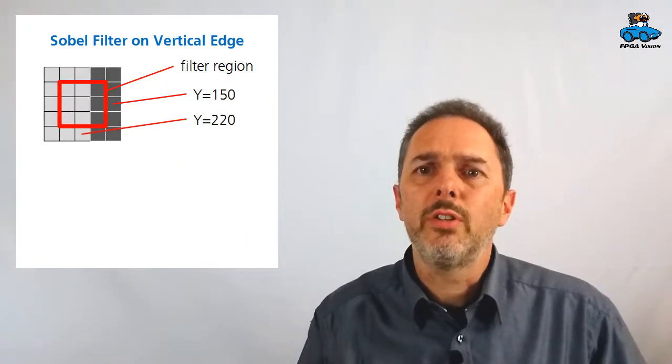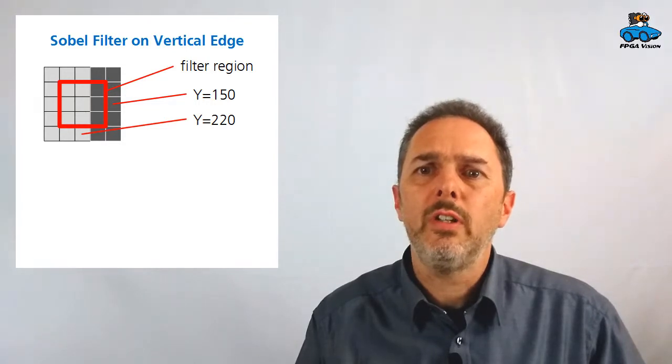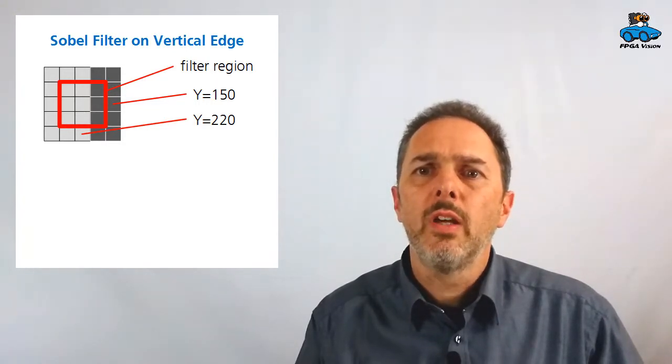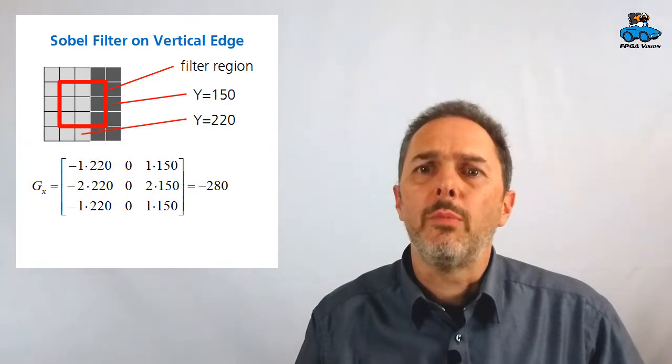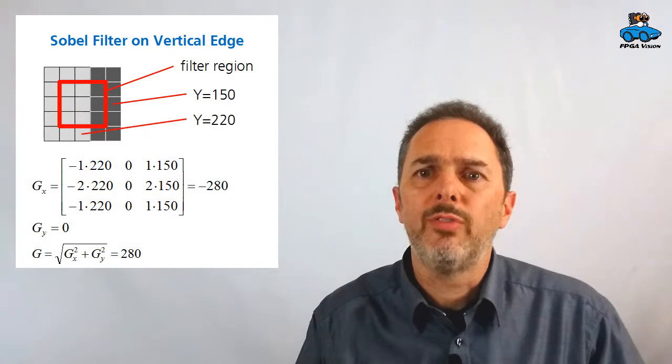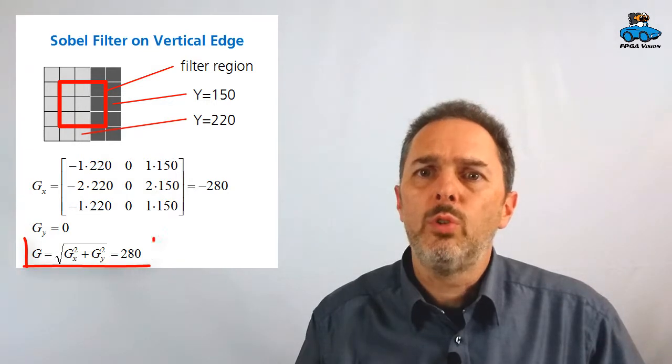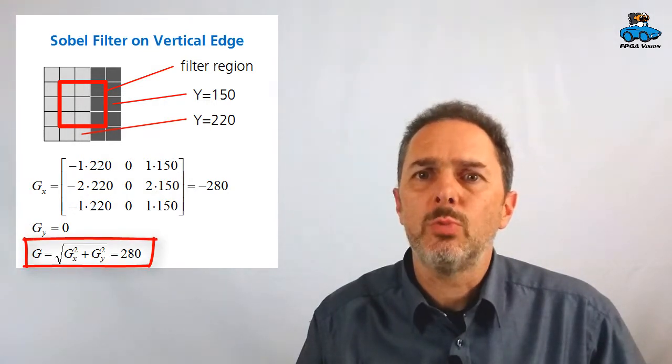So let's consider a vertical edge. We have some pixels with a value of 150, others with 220. If we take the Sobel filter, we get from the horizontal filter a value of minus 280, and from the vertical filter, we get a value of 0. So if we take both values to the square, add them, take the square root, we get a value of G with 280, which is an indication of the edge we have here.